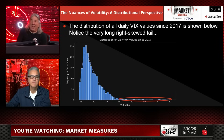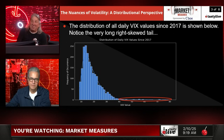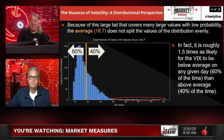The distribution of all the daily VIX values since 2017 is shown below. Notice the very long right-skewed tail. That gives you a good picture, but let's keep going — because of this large right tail that covers many large values with low probability.